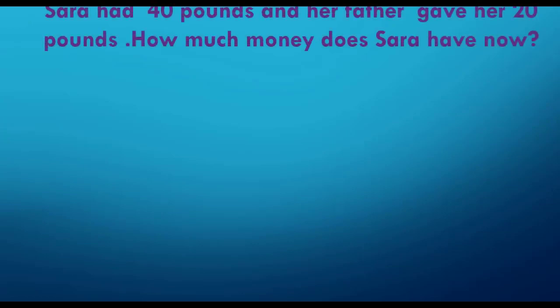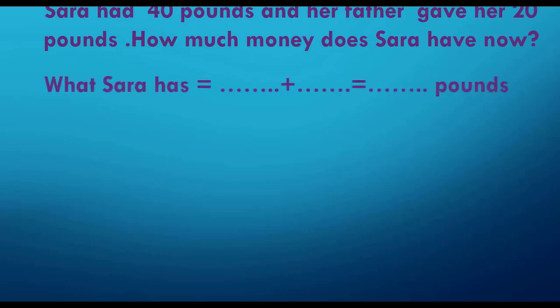Sara has 40 pounds and her father gives her 20 pounds. How much money does Sara have now? Sara had 40 and her father gave her 20 — 'give her' means plus/add. So 40 plus 20: 0 units plus 0 units equals 0 units, 4 tens plus 2 tens equals 6 tens. Sara now has 60 pounds.